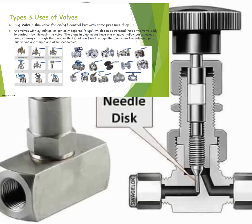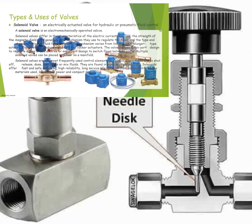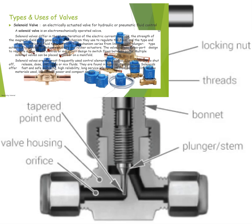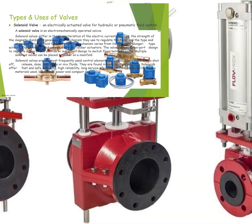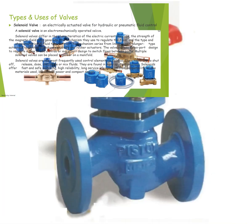The next one is the solenoid valve, an electrically activated valve for hydraulic or pneumatic fluid control. A solenoid valve is an electro-mechanical operated valve. Solenoid valves differ in the characteristics of the electric current they use, the strength of the magnetic field they generate, the mechanism they use to regulate the flow, and the type and characteristics of the fluid they control. The mechanism varies from linear action plunger-type to regulate flow, or uses a three or more port design to switch flows between ports.